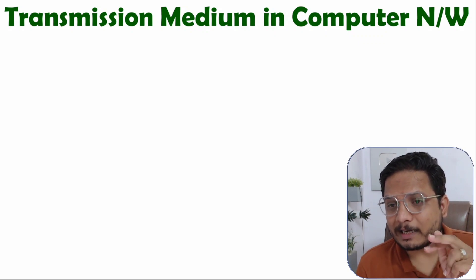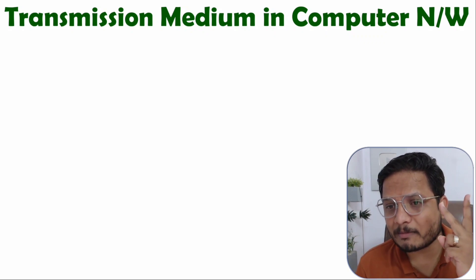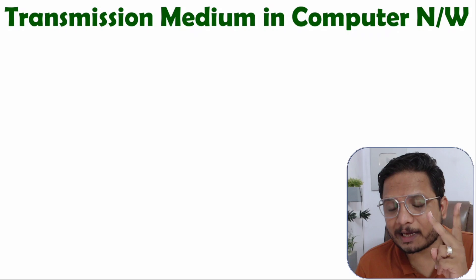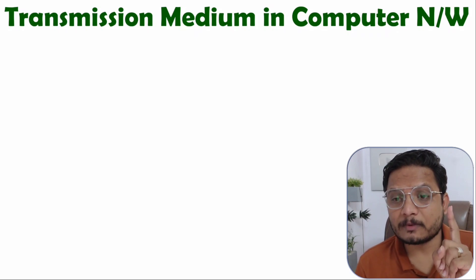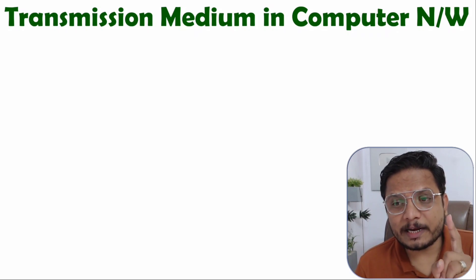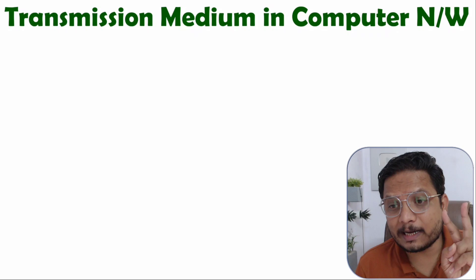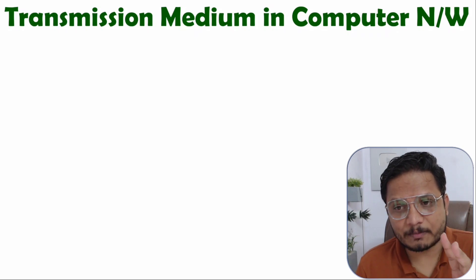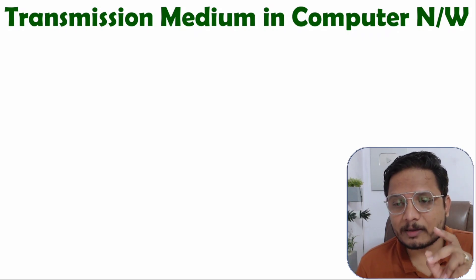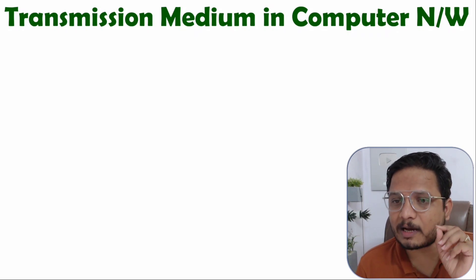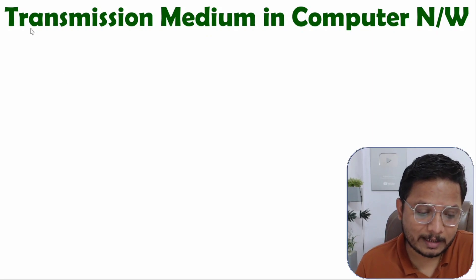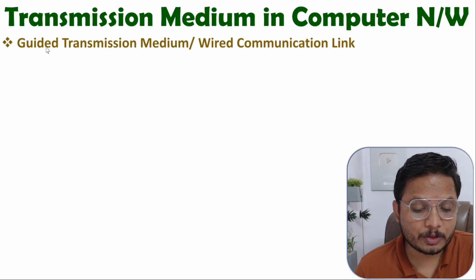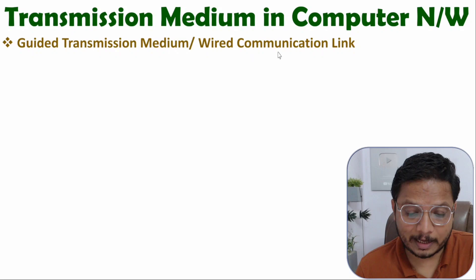When it comes to transmission medium, there are basically two categories: one is guided transmission medium and the second is unguided transmission medium. Guided transmission medium is also referred to as a wired communication link.